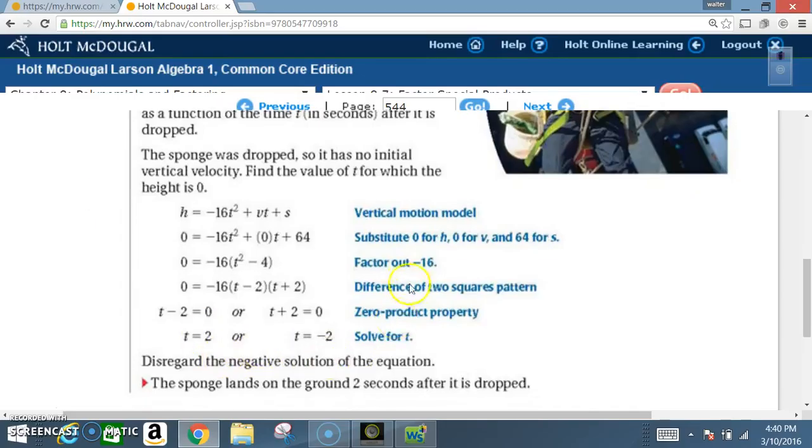So we use our vertical motion model. Everybody should know the equation by now. h is equal to negative 16 t squared plus vt plus s. Substitute zero for h and zero for velocity and 64 for s. So the height is zero. The velocity is zero. And the initial height was 64.